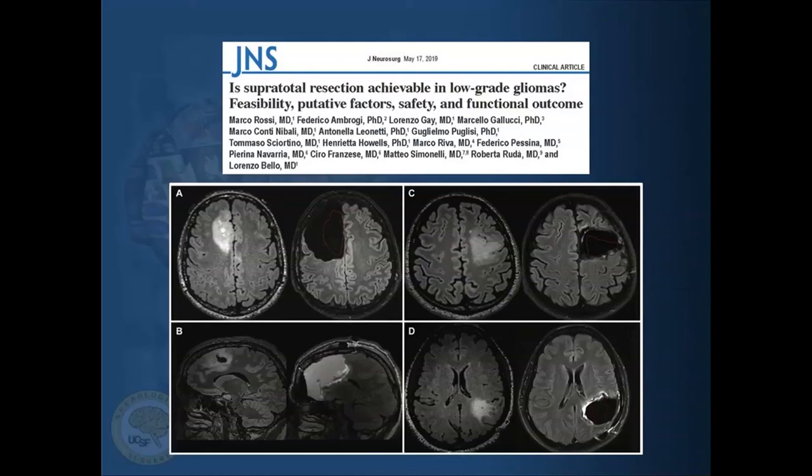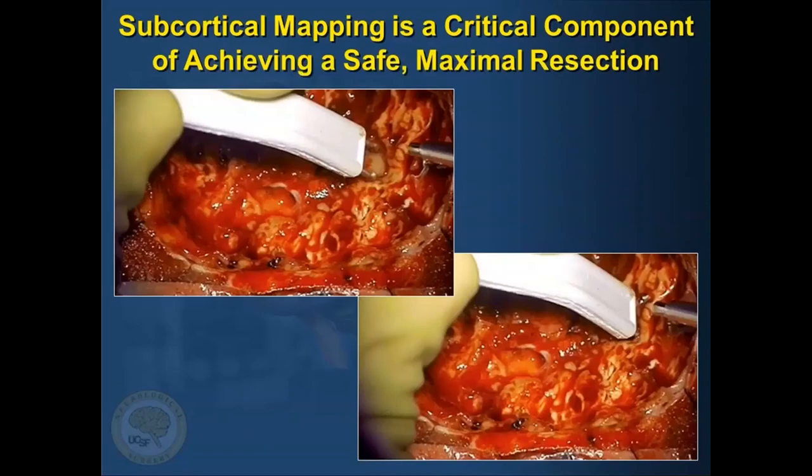This is work from Lorenzo Bello's group showing that the initial hypothesis that Dr. Defoe put forth is not only achievable — meaning a supertotal resection — but clearly indicated in achieving a radical resection for low-grade gliomas. So now the stage is set in the sense that we as neurosurgeons are now obligated to proceed with an extensive resection. The critical issue is how to do it safely.